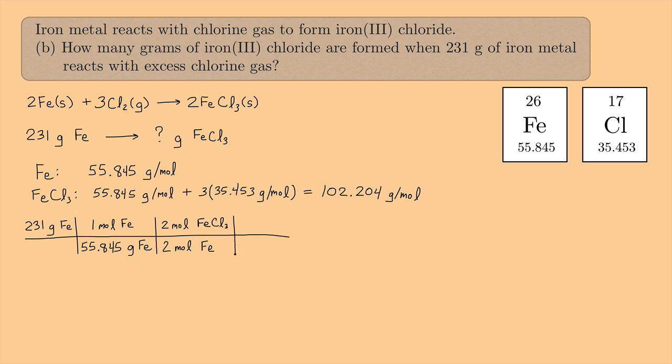And then two moles of iron(III) chloride will go upstairs. And now I'm almost done. I have moles of iron(III) chloride. I want grams of iron(III) chloride. That's where this 162.204 is going to come in. So now I'm going to want the moles downstairs and the grams upstairs. So that means 162.204 grams of iron(III) chloride will be in one mole of iron(III) chloride.